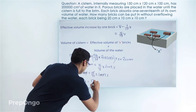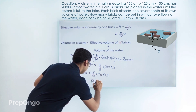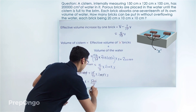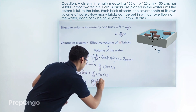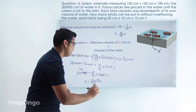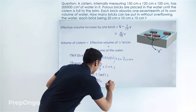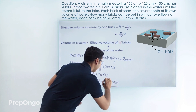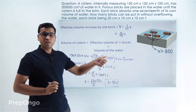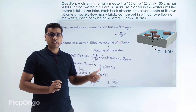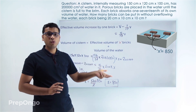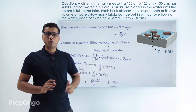This works out to be 1700/2, which cancels to give 850. So we can say that we require 850 of such porous bricks to fill this cistern to the brim with water.